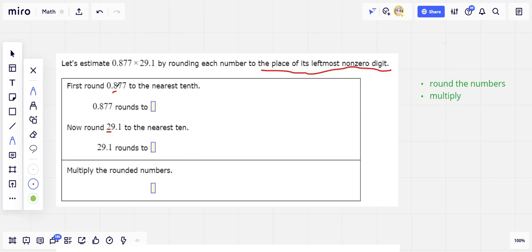When you round to a place, you look at the place to the right and ask, is that 5 or above or is it below 5? If it's 5 or above, you round up. So we're going to round this 0.877 up to 0.9. So this should be 0.9.